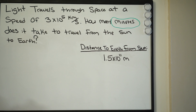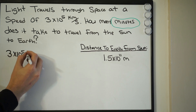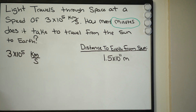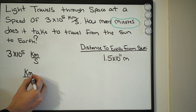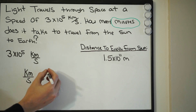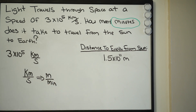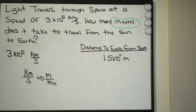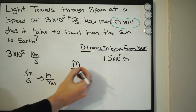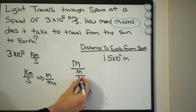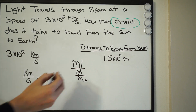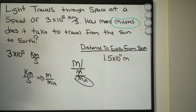If we look at our speed, we have 3 times 10 to the 5th power in kilometers per second. We want to essentially convert this to meters per minute. Because once we do that, if we take our distance in meters and divide it by speed in meters per minute, the meters cancel and we're left with minutes — exactly what they want. So we must first convert and then divide.